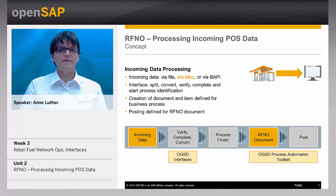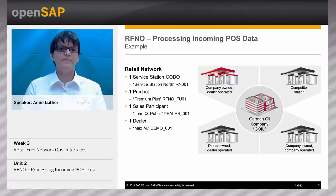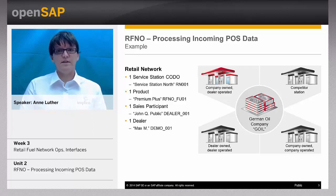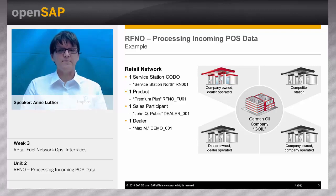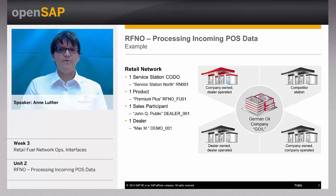In our example, data will be received via IDOC. Our simple retail network is composed of one German oil company with only one service station. The service station type is company owned and dealer controlled. The grade items show the other possible station types. The station type decides about the processes — who is the owner of the materials, and who gets payment for goods and for performances.